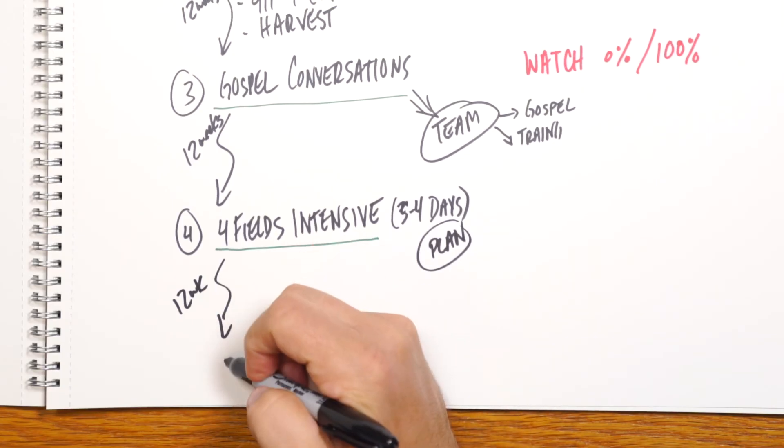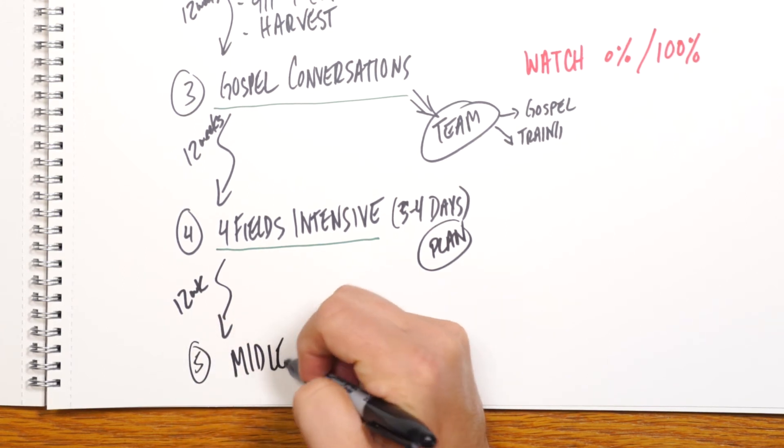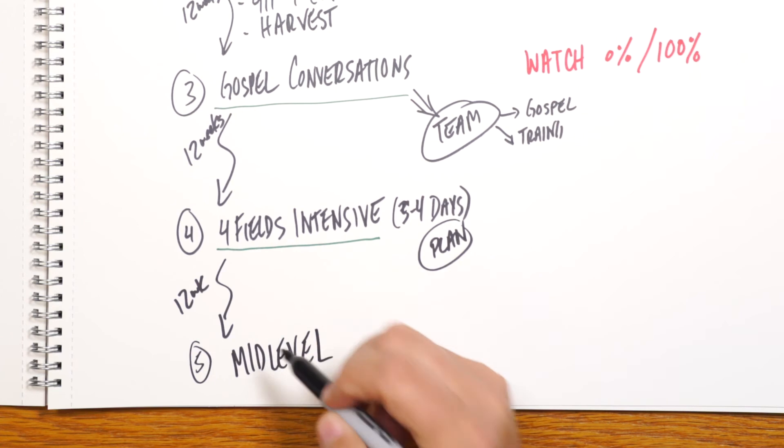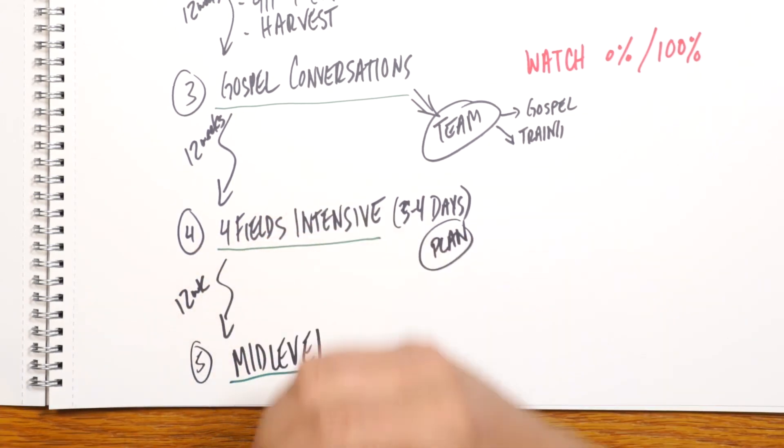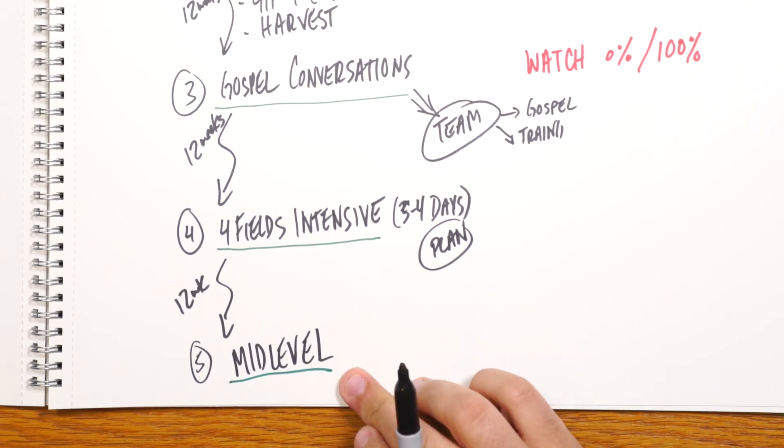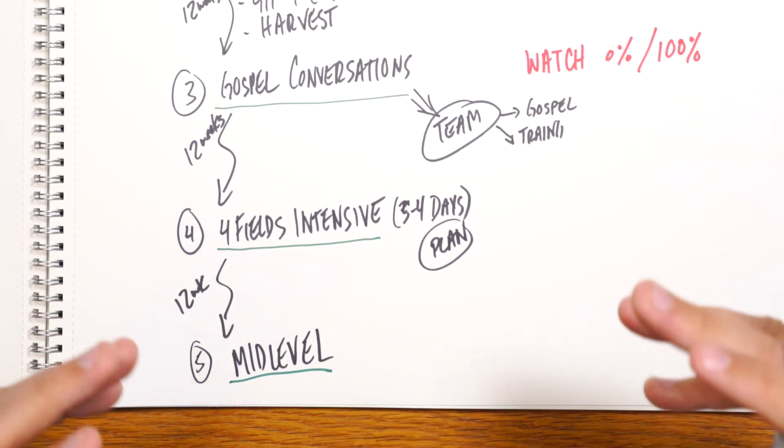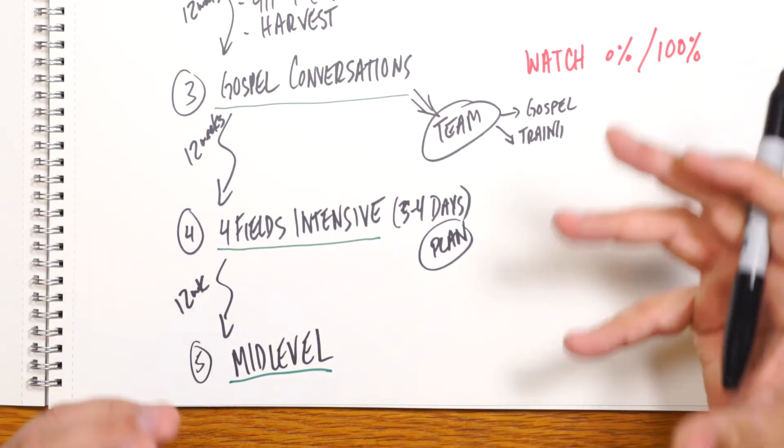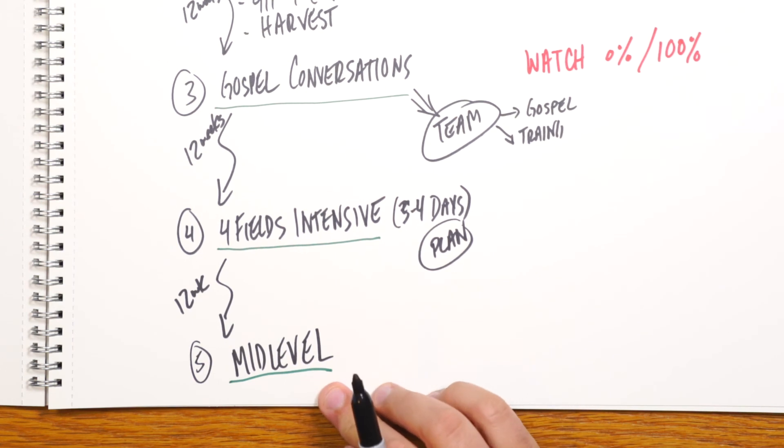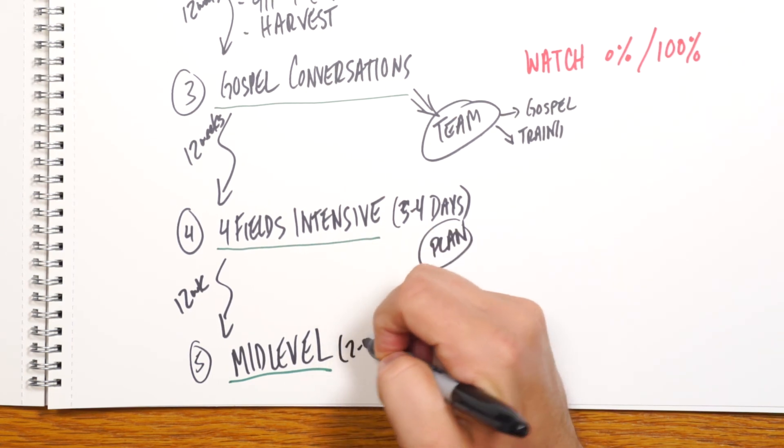And we would have them come back for the next training, which we're calling a mid-level training. And the mid-level training is really to help with your problem solving. We use a tool called the Iron on Iron, which is, they've identified stuckages or barriers they have. And together, they're coming up with solutions to help them get unstuck. And this is anywhere from two to three days.